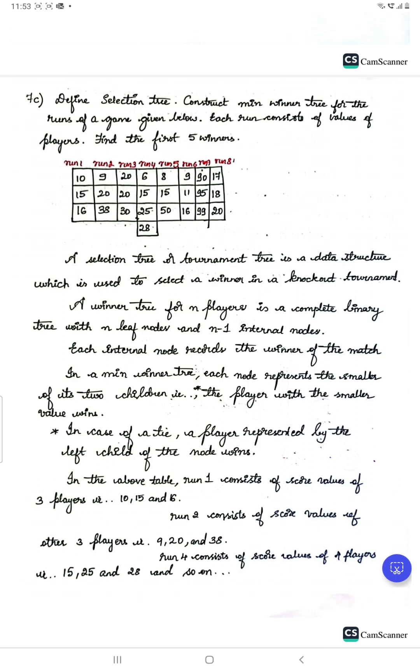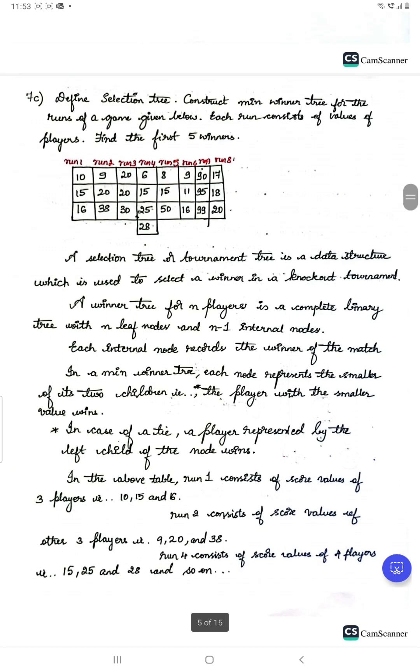There are two types: min winner and max winner. What is selection tree? A selection tree or tournament tree is a data structure which is used to select a winner in a knockout. As it indicates minimum, we will be selecting the minimum value out of the whole values.